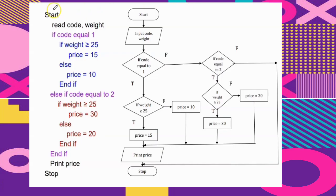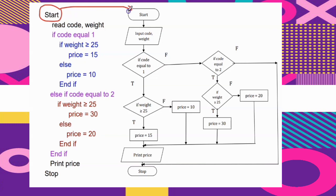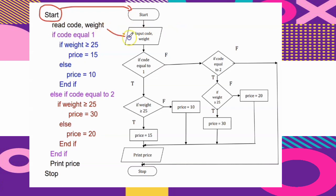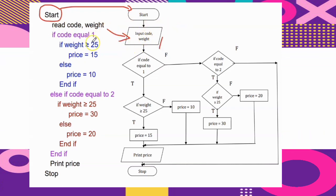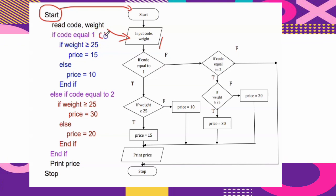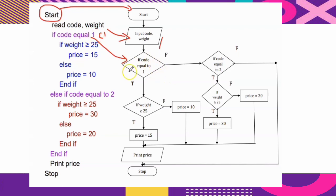To draw the flowchart, use suitable symbols. For START, use a capsule shape or terminal symbol. READ code and weight uses a parallelogram shape. For the first (outer) condition, code equal to 1, use the decision symbol. Copy the condition and write it inside the decision symbol.